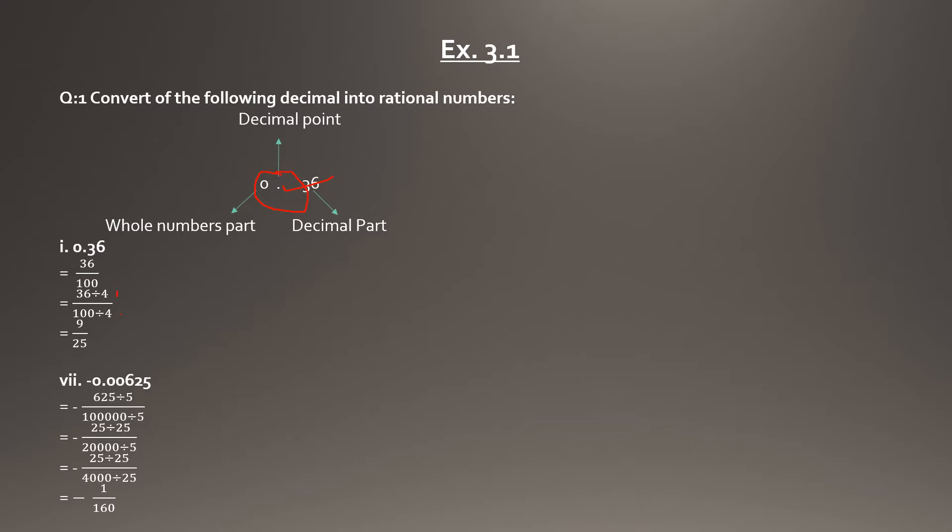When we divide both by 4, we get 9 over 25. If the number is negative, we simply carry the negative sign and solve the rest the same way. For a number with 5 digits after the decimal point, the denominator becomes 1 lakh (100,000), and the numerator is 625. Dividing both by 5 gives 25 over 20,000, and dividing again gives us 1 over 160, or minus 1 over 160 for the negative form.